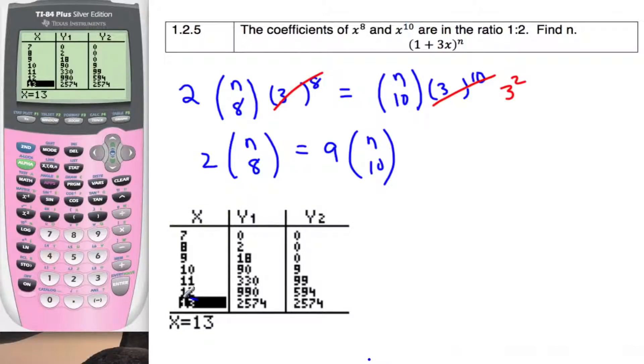So we can see that if n equals 13, the coefficients are equal. n equals 13.